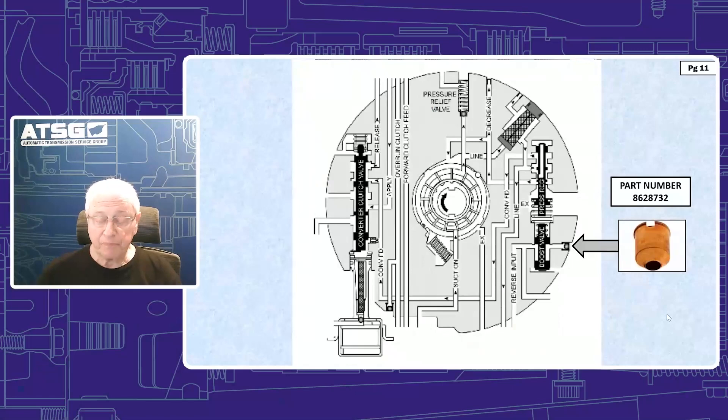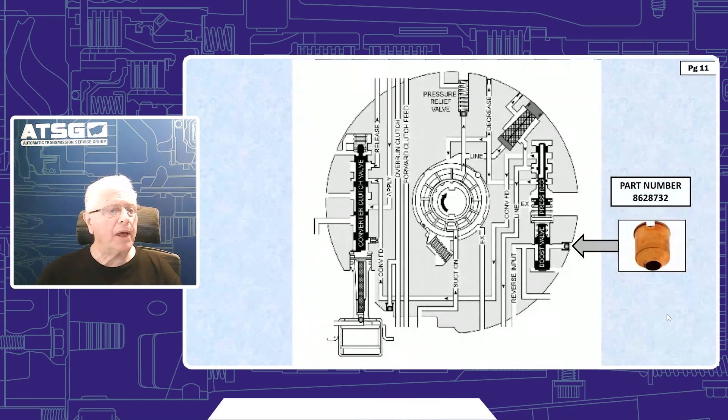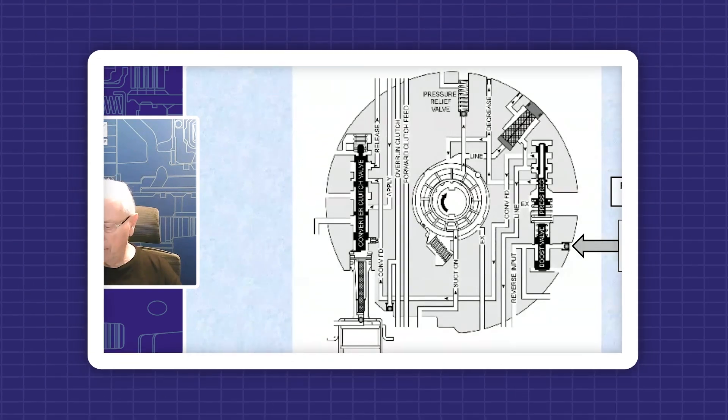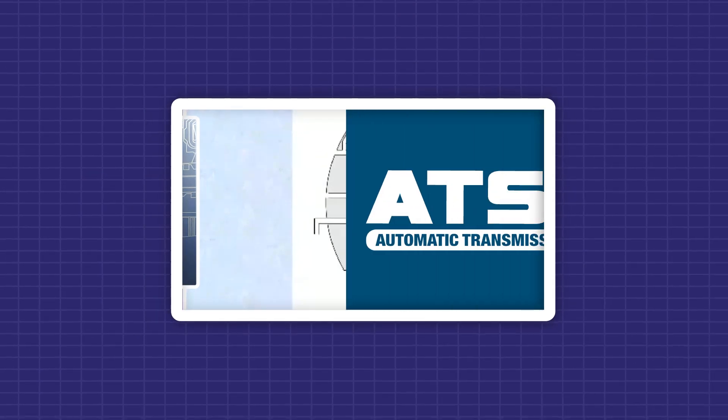Now, the idea of this capsule is simply to bleed the air from beneath the reverse input clutch apply piston and that's its sole purpose. But without it, we're going to bleed everything out.